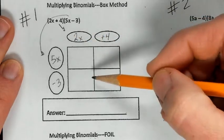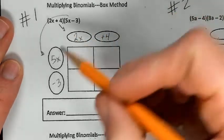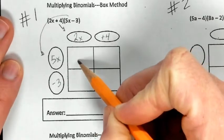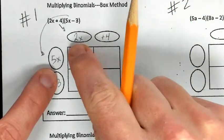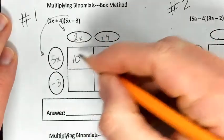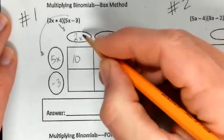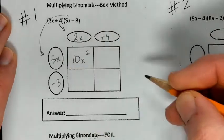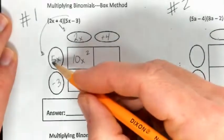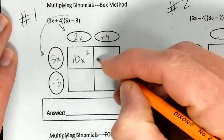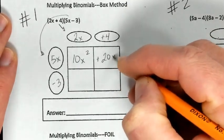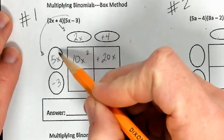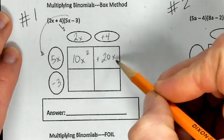Now to get inside the box, we must multiply. I'm going to multiply 5x times 2x and get the product in this box right here. Well, 5 times 2 is going to give me 10, and then x times x — those are both raised to the first power — so that gives me x squared. I'm going to do the same thing here: 5x times a positive 4 is going to give me a positive 20x, because 5 times 4 gives me 20, and then I have x to the first power, no more x's, so x to the first.